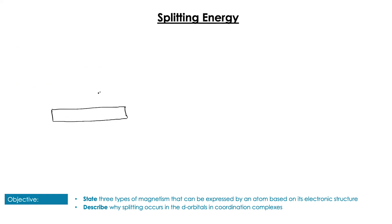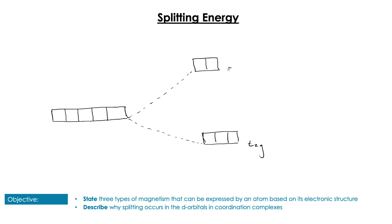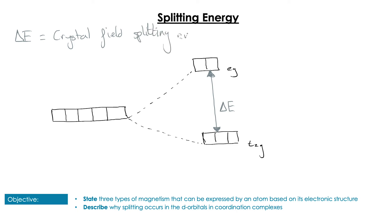This splitting has an associated energy that goes with it. We would have five degenerate d orbitals normally, and we end up with two high-energy d orbitals and three low-energy d orbitals. The gap in energy between the t2g and the eg orbitals — which we call delta E — is called the crystal field splitting energy, and this is applicable to all octahedral complexes.